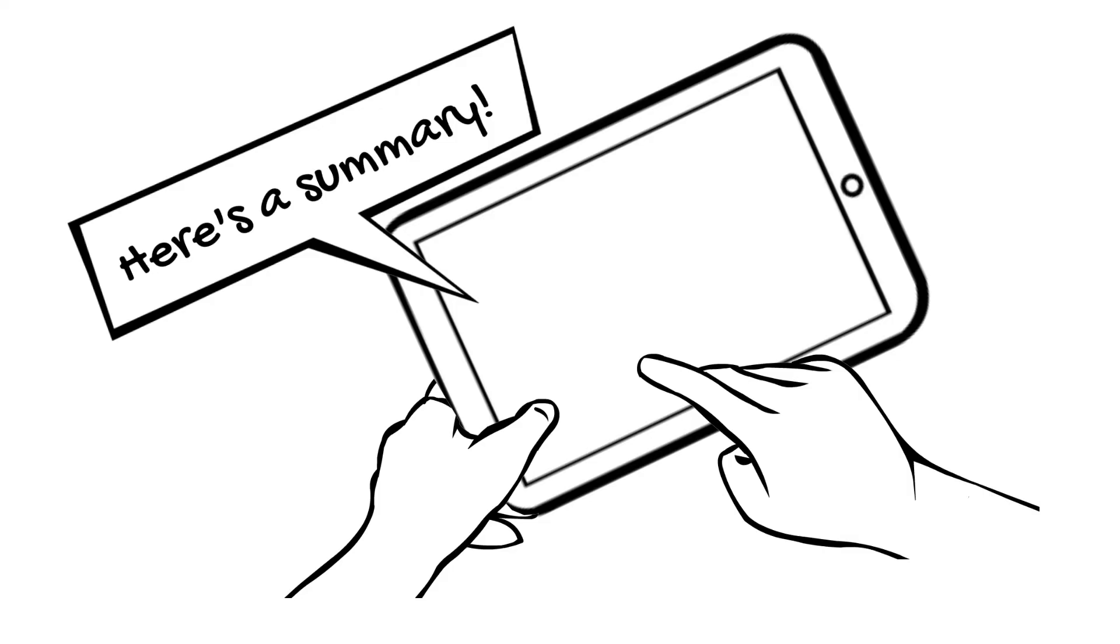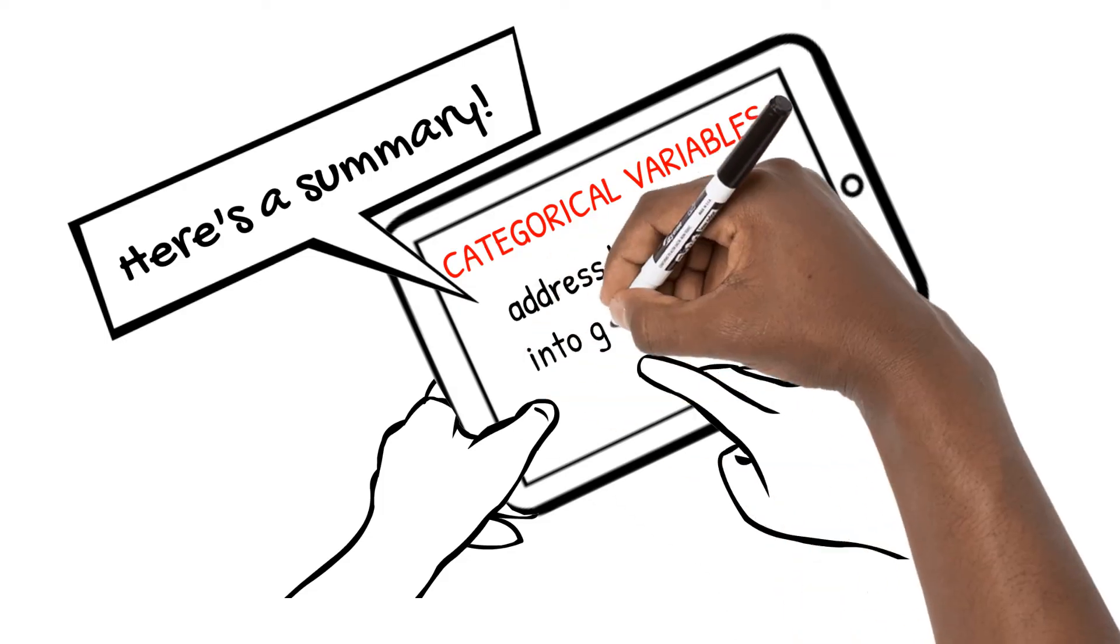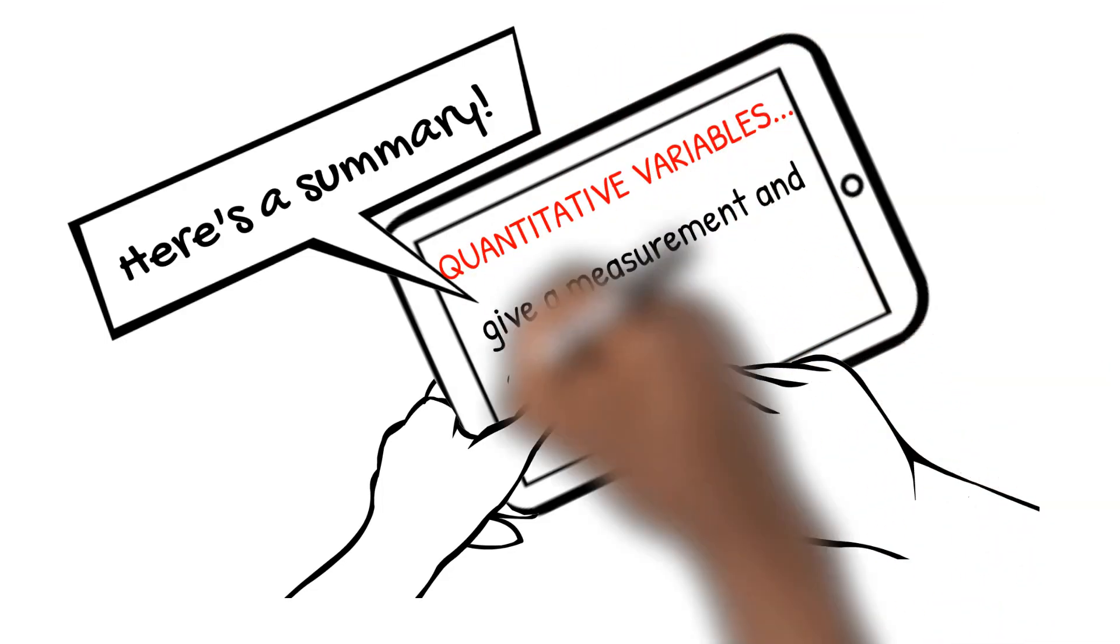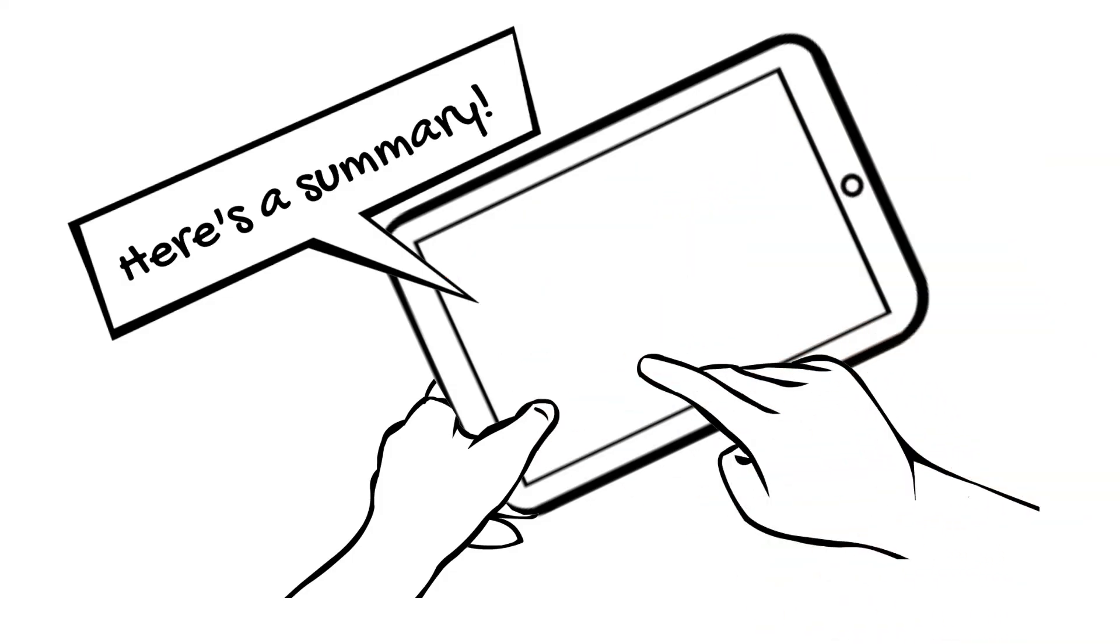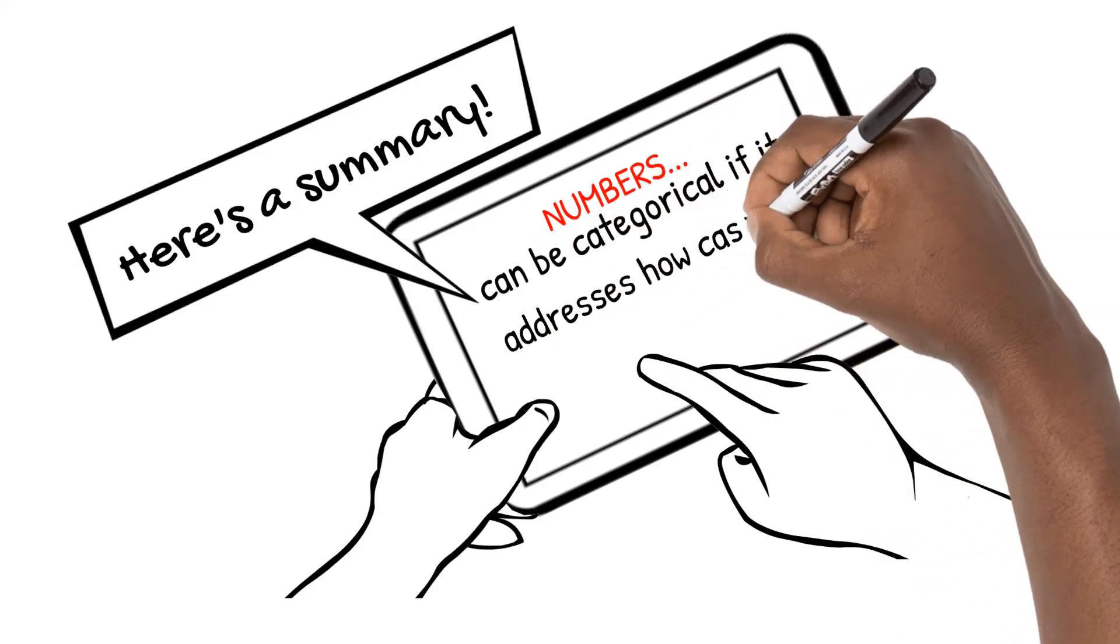Let's summarize what we learned in this video. Categorical variables address how variables fall into groups. Quantitative variables give a measurement and come with units. And remember, numbers can represent categories too, depending on the context.